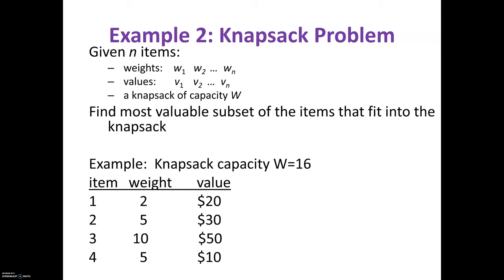The next example is the Knapsack Problem. Here you are required to find the most valuable subset of items that fit into the knapsack. You are given n items with weights w1, w2, ..., wn and corresponding values. The capacity of the sack is W. You have to fill the sack to maximize the total value. An instance of the problem is given with four items and a sack capacity equal to 60.